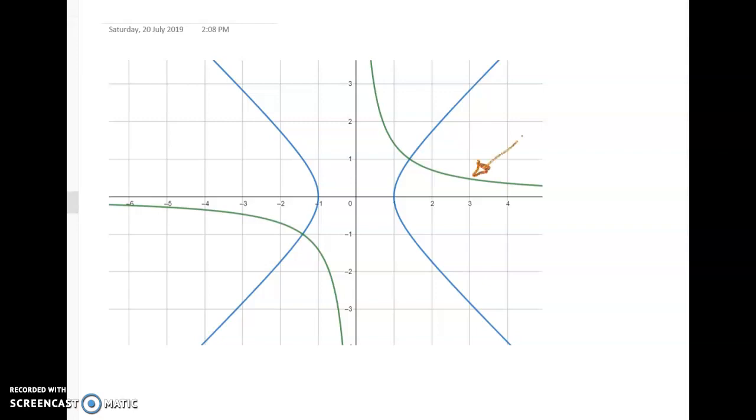So these are the two graphs. This one is xy equals root 2 and this one, the blue one, is x squared minus y squared equals 1. And you can see where they intersect are these two points here and if we look at the tangents we can see that they're perpendicular. So that all looks good.